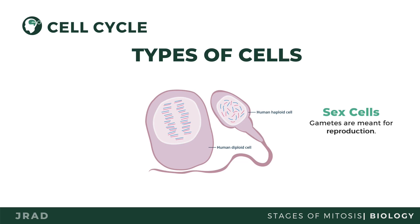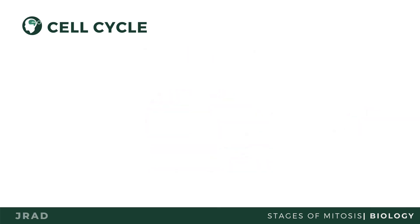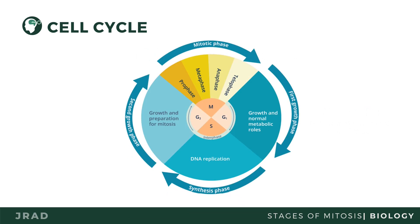The cell cycle refers to the process happening within the cell as it prepares and executes cell division. It generally has three phases: interphase, the mitotic phase, and cytokinesis.